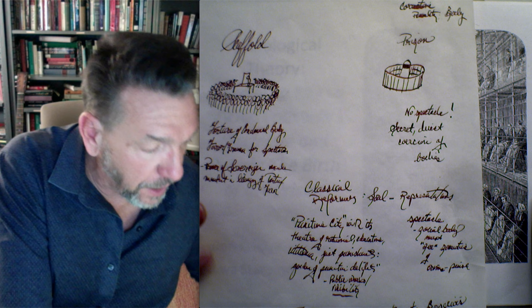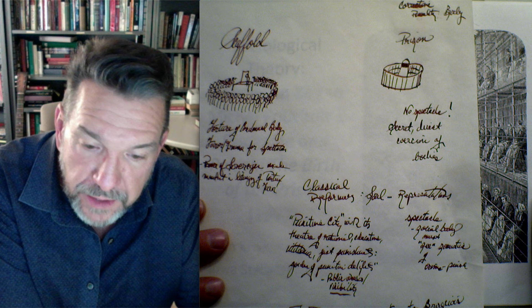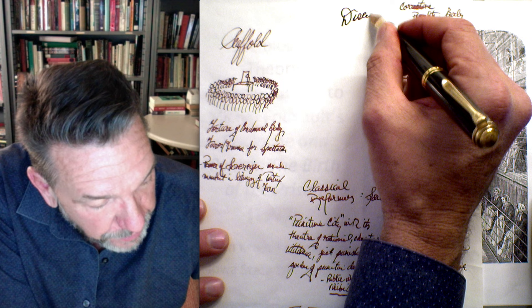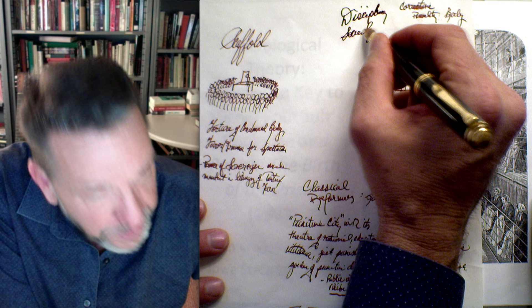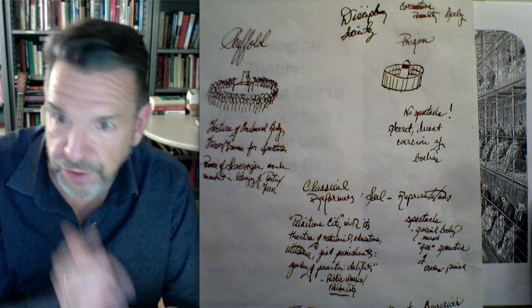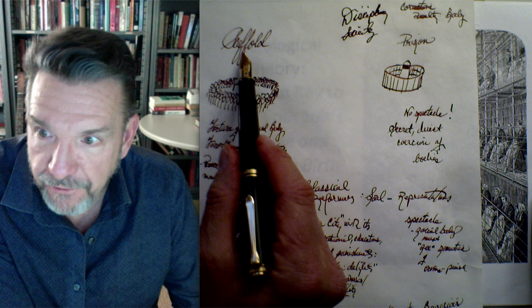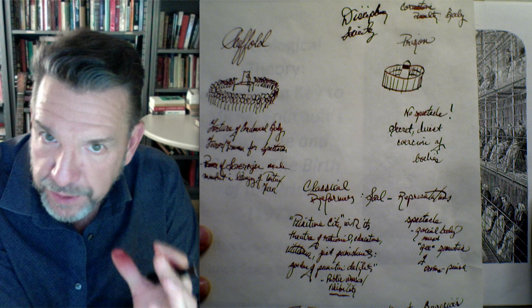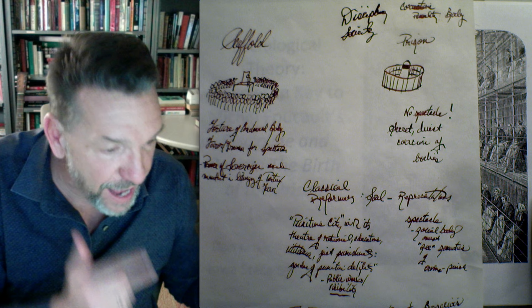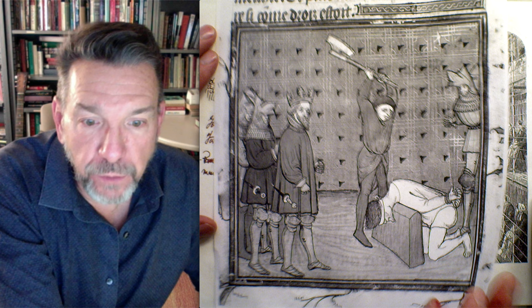Let's quickly remind ourselves what Foucault is doing. He's trying to make sense of modern disciplinary society — what he thinks we're living in right now. In order to comprehend how it came about, he began by having us understand the logic of punishment and power in traditional societies, especially the monarchical societies of Europe. The scaffold was the physical stage upon which the theater of punishment and power was enacted.